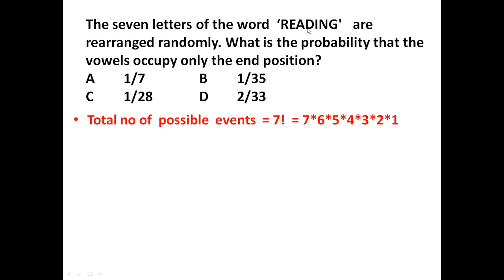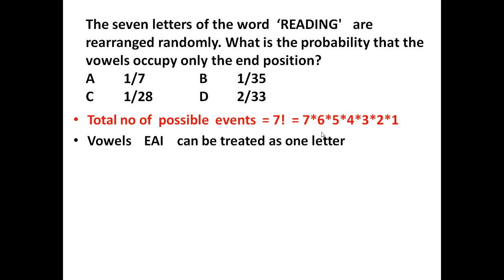The word 'reading' consists of 7 letters. So the total possible events — these 7 letters can be arranged in factorial 7 ways. Factorial 7 means 7 into 6 into 5 into 4 into 3 into 2 into 1.